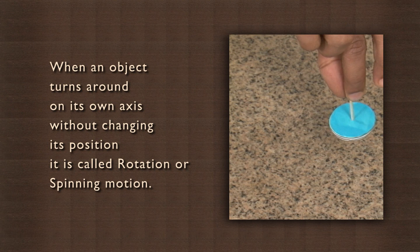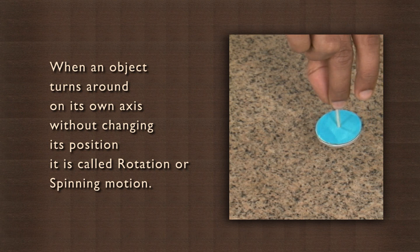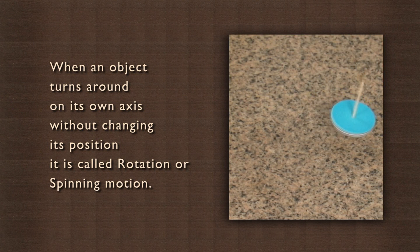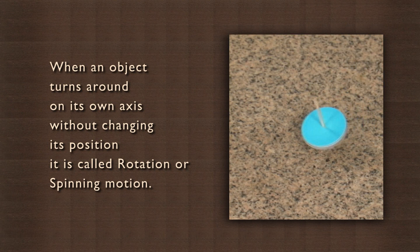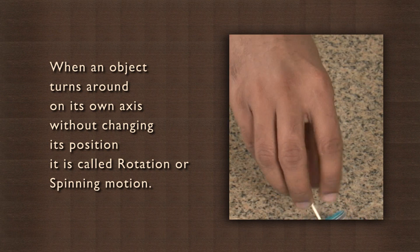When an object turns around on its own axis without changing its position, it is called rotation or spinning motion.